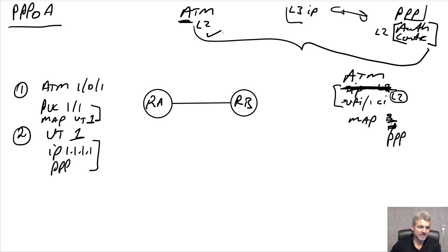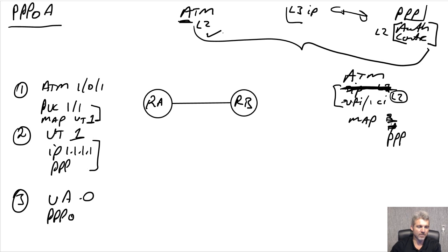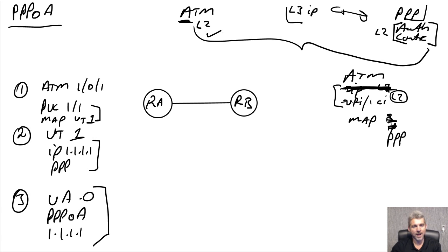What happens then is something very clever: it creates a virtual access interface. Inside the virtual access interface you'll see PPP over ATM with everything negotiated, bound to an IP address of 1.1.1.1. That's pretty much the setup procedure.